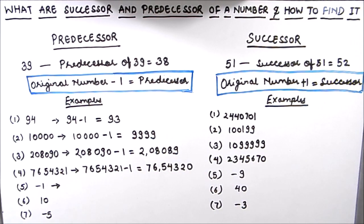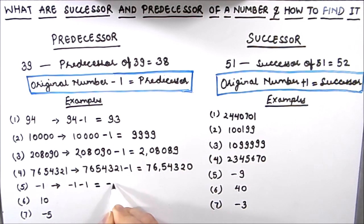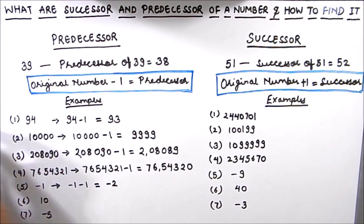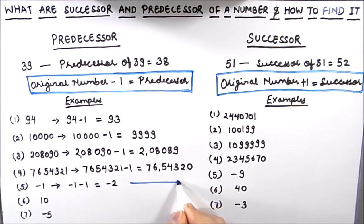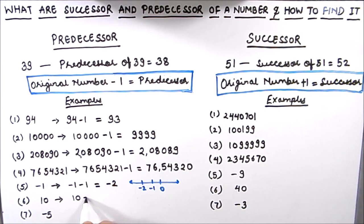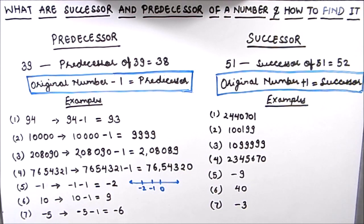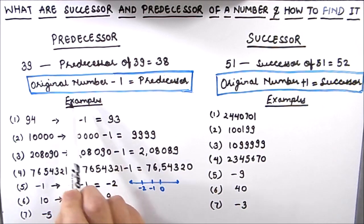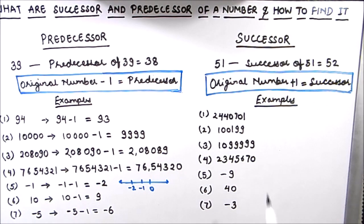Now we have a negative integer. For finding the predecessor of -1, we subtract 1, so -1 minus 1 gives us -2. We can understand this using a number line — on the number line, -2 is on the left-hand side of -1, and its value is less. Hence the predecessor of -1 is -2. Similarly, the predecessor of 10 is 9, and the predecessor of -5 is -6, since -6 is one less than -5.